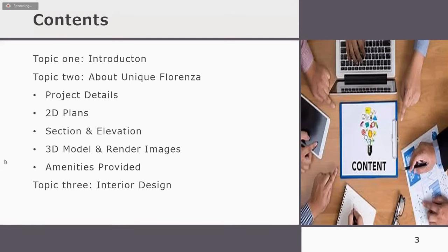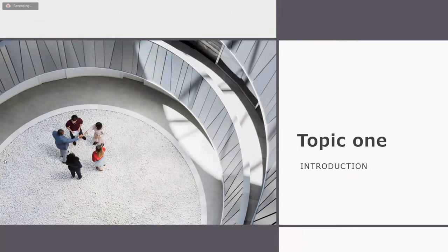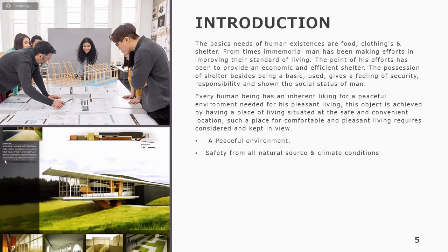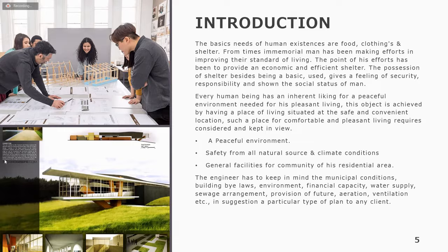Introduction: as you all know, the basic needs of human beings are food, clothing, and shelter. From time immemorial, man has been making efforts to improve the standard of living. The point of his efforts has been to provide an economic and efficient shelter. The shelter, besides being a basic need, gives a feeling of security, responsibility, and shows the social status of man. Every human being has an inherited liking for a peaceful environment needed for pleasant living, achieved by having a place situated at a safe and convenient location.